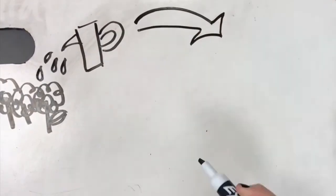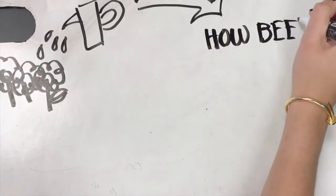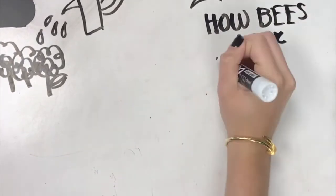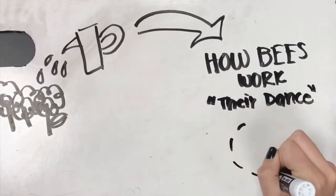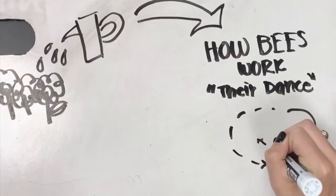Bees communicate to their hive mates through the release of pheromones and specific behaviors such as dances. They use this to signal where the good sources of pollen and nectar are located. The honeybees can move forward, backward, to the sides, and make loops in order to communicate.